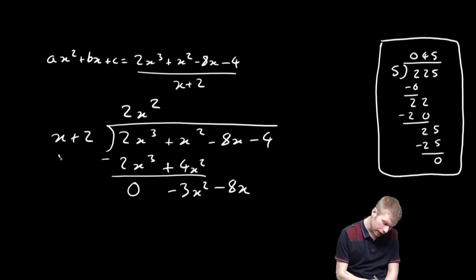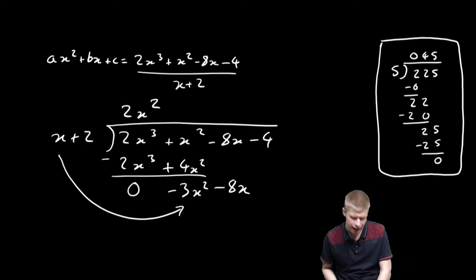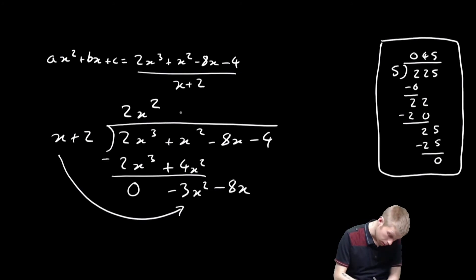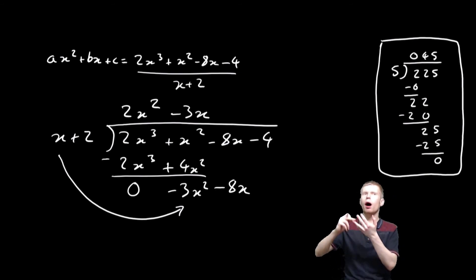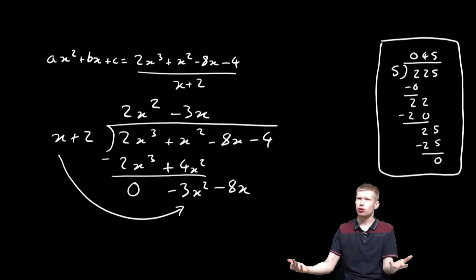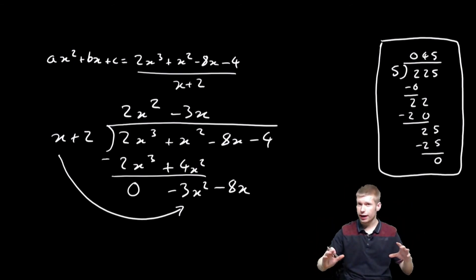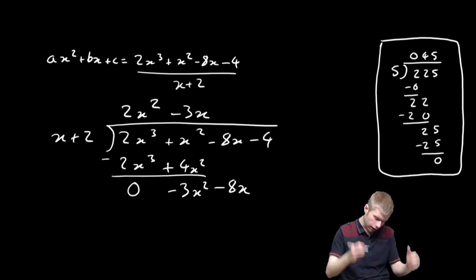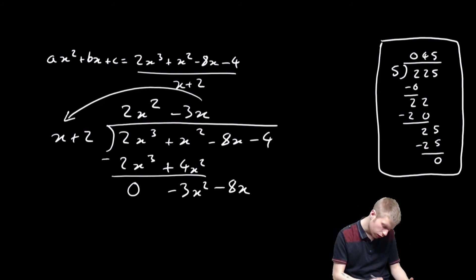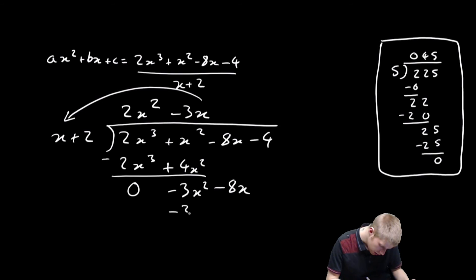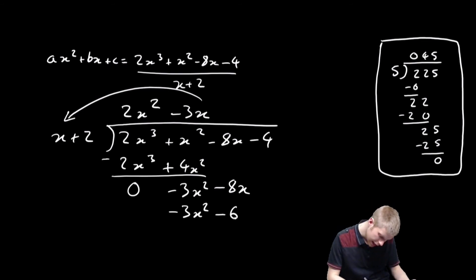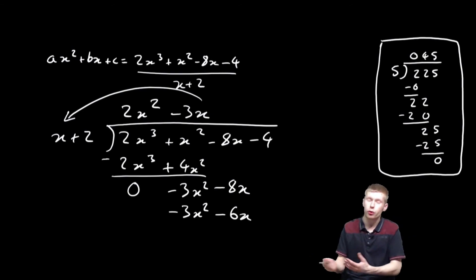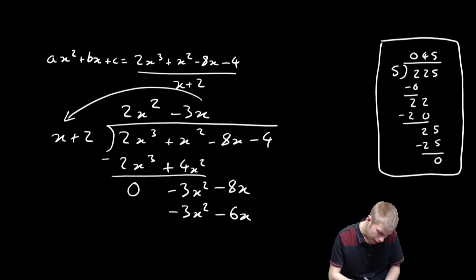Now how many times does x go into −3x²? It goes in −3x times — I multiply x by −3x to get −3x². Then I multiply −3x by (x + 2) to get −3x² − 6x. I take away to find the remainder. The −3x² terms cancel, giving 0.